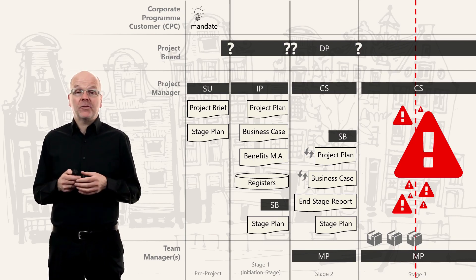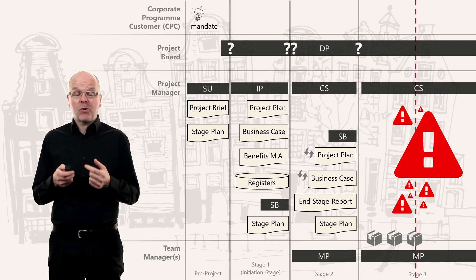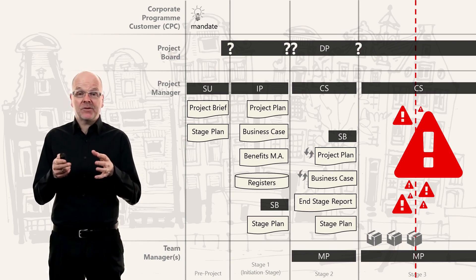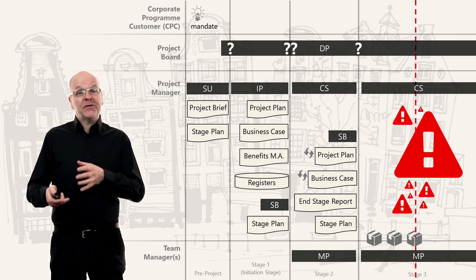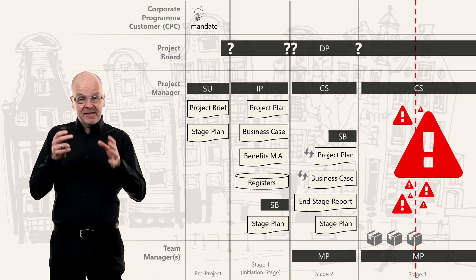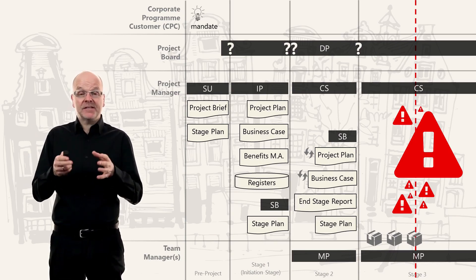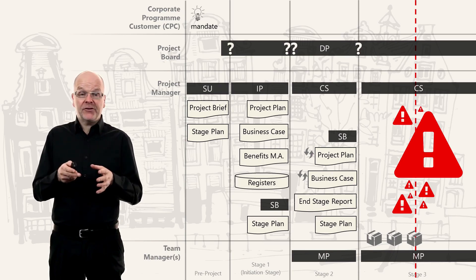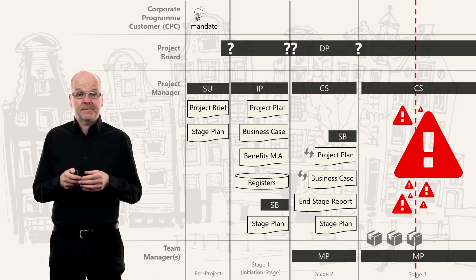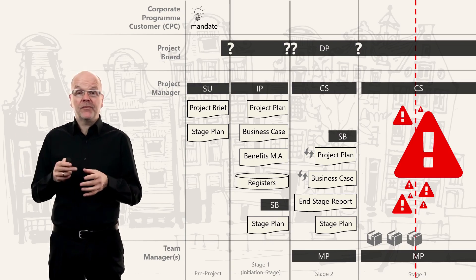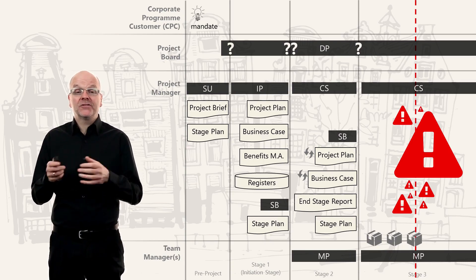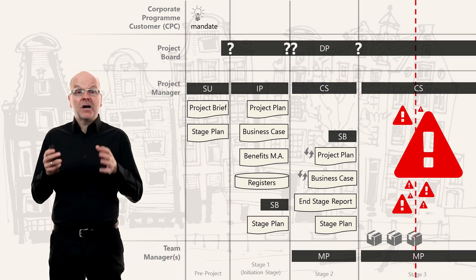Let me explain tolerances in a very simple way. Imagine I work for an insurance company and I deal with claims from 1 to 500 euro — that's my tolerance. If a claim comes in for 600 euro, it's escalated to my boss, who deals with claims from 500 to 5,000. If a claim comes in above 5,000, it's escalated further. Each level has its own level of tolerance.